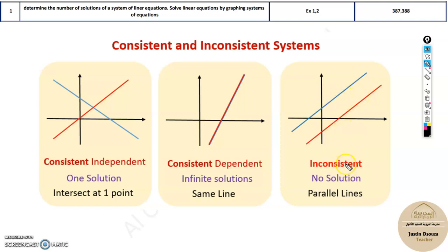If there's no solution, it's just inconsistent—no dependent or independent, just inconsistent because it has no solution with parallel lines. There are infinite solutions because they are the same line, and in the first case, consistent independent is only one solution intersecting at one point.